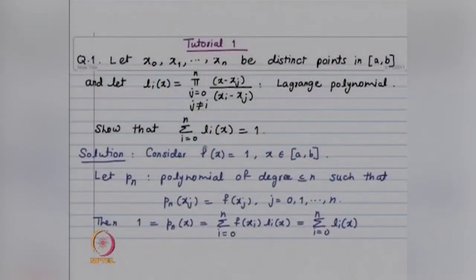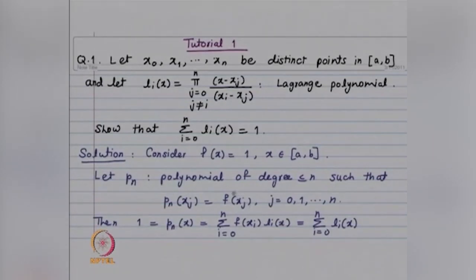The simplest choice is f(x) = 1. For f(x) = 1, it is a constant polynomial. When p_n is a polynomial of degree ≤ n interpolating the constant function, it is going to be the function itself. So choose f(x) = 1 for x ∈ [a, b] and let p_n be the interpolating polynomial of degree ≤ n such that p_n(x_j) = f(x_j). The general form is p_n(x) = Σ f(x_i) l_i(x), i = 0 to n. Since p_n(x) = 1 and f(x_i) = 1, we get Σ l_i(x) = 1.